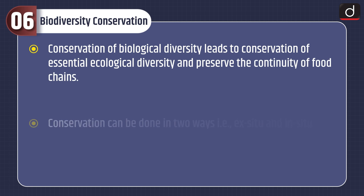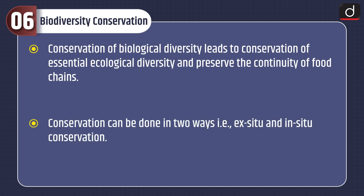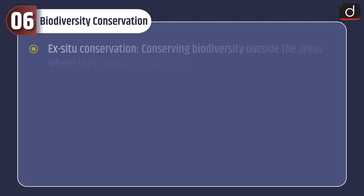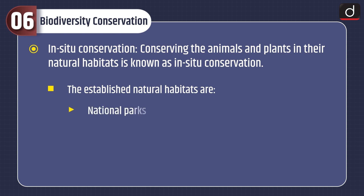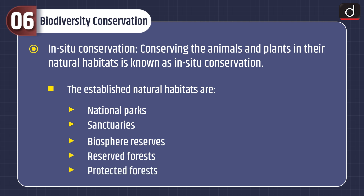Conservation of biological diversity leads to conservation of essential ecological diversity and preserves the continuity of food chains. Conservation can be done in two ways: ex-situ and in-situ. Ex-situ conservation means conserving biodiversity outside the areas where species naturally occur — animals are reared or plants are cultivated in zoological parks or botanical gardens. Seed banks, botanical, horticultural, and recreational gardens are important centers for ex-situ conservation. In-situ conservation means conserving animals and plants in their natural habitat, through national parks, biosphere reserves, reserved forests, and protected forests.